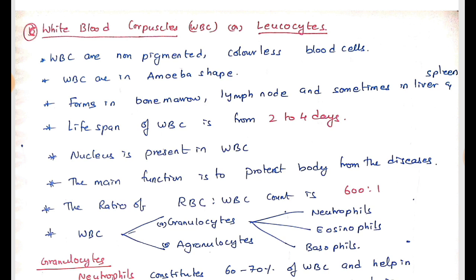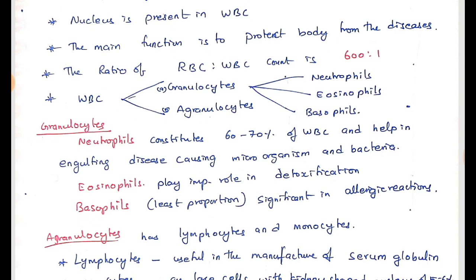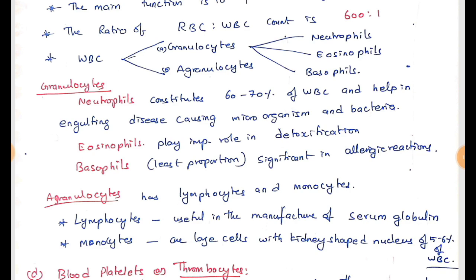WBCs have granulocytes and agranulocytes. Granulocytes are further divided into neutrophils, eosinophils, and basophils. Neutrophils make up 60 to 70% of WBCs and help in engulfing disease-causing microorganisms and bacteria. Eosinophils play an important role in detoxification. Basophils are significant in allergic reactions. Agranulocytes have lymphocytes and monocytes. Lymphocytes are useful in the manufacturing of serum globulin, whereas monocytes are found in very low numbers, around 5 to 6% of WBCs.